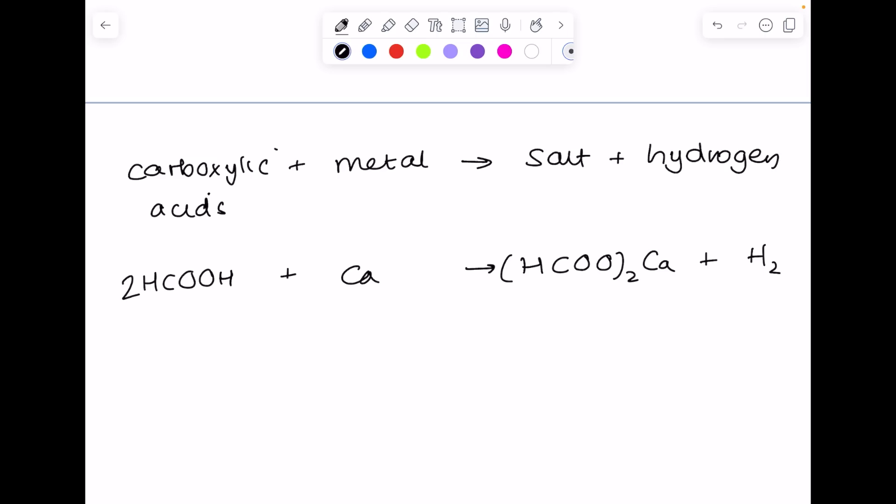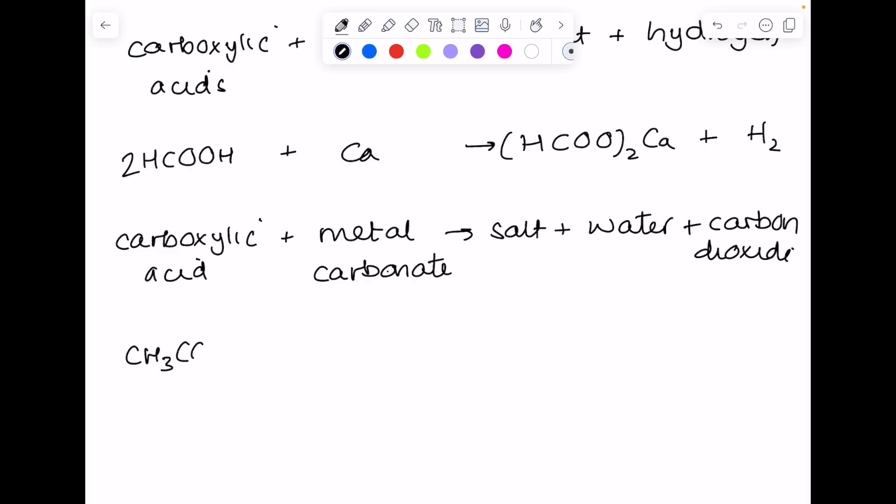If I were to take a carboxylic acid and react it with a metal carbonate, for example, you'd produce a salt plus water plus carbon dioxide. So here's ethanoic acid as an example, here's calcium carbonate, again drawing that super carefully and then make sure it's balanced.